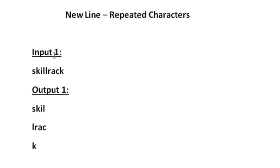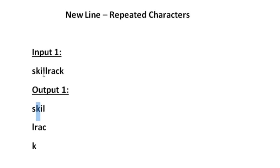Let us see sample input one. The given input string is 'skillrack'. The first character is 's', so we print it as such since it has not repeated. The next character is 'k', the first occurrence of 'k', so we print it. Then 'i', also occurring for the first time, so we print it. The fourth character is 'l', so we print 'l'. Now the fifth character is again 'l', so 'l' has repeated for the first time and we print the repeated character 'l' on a new line.